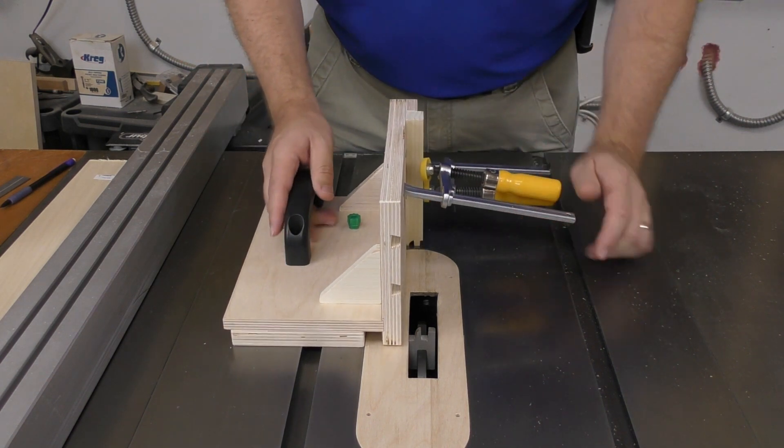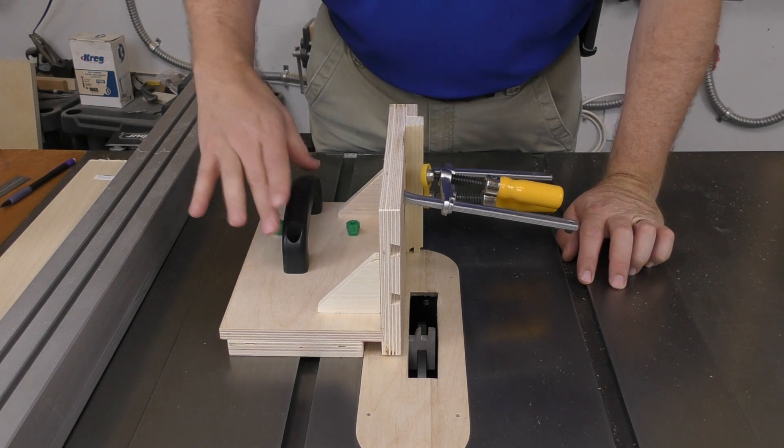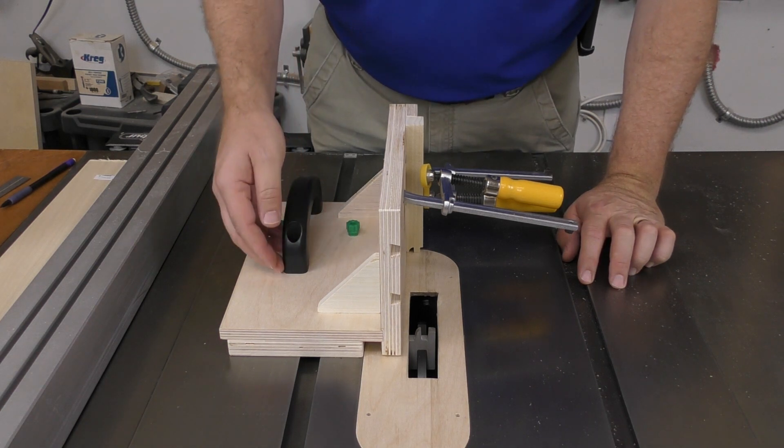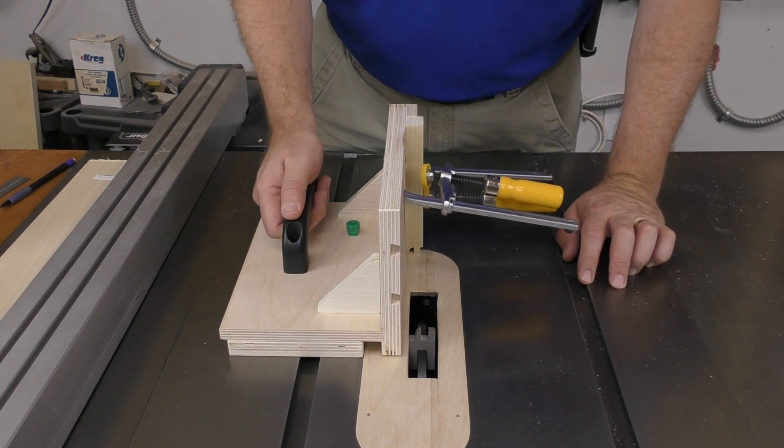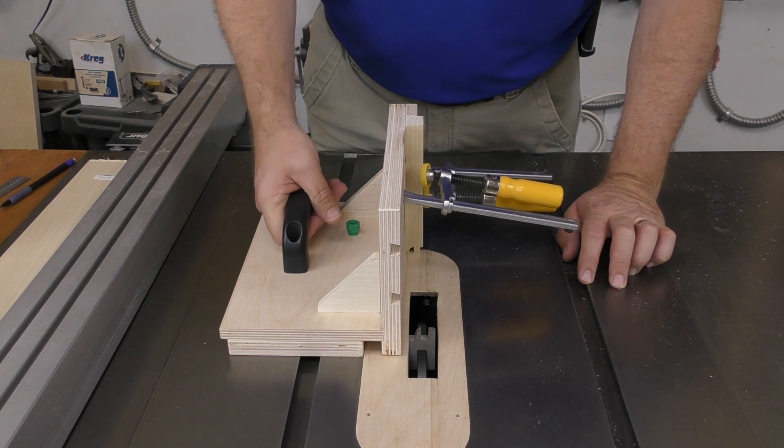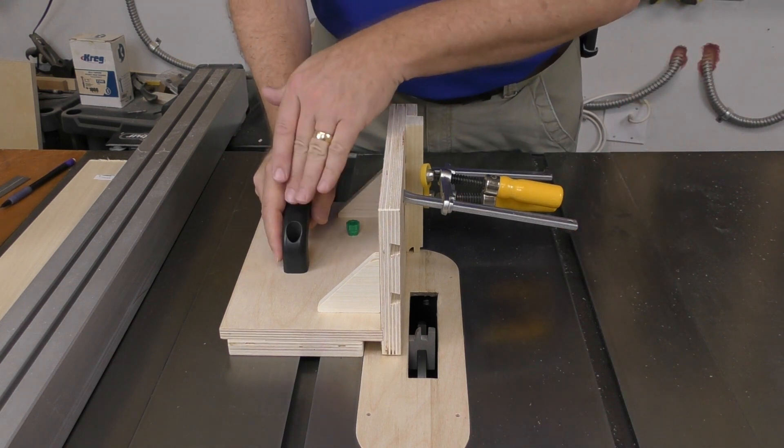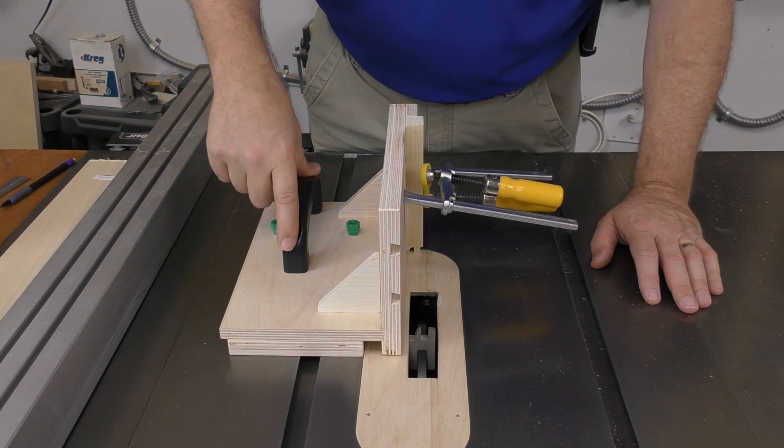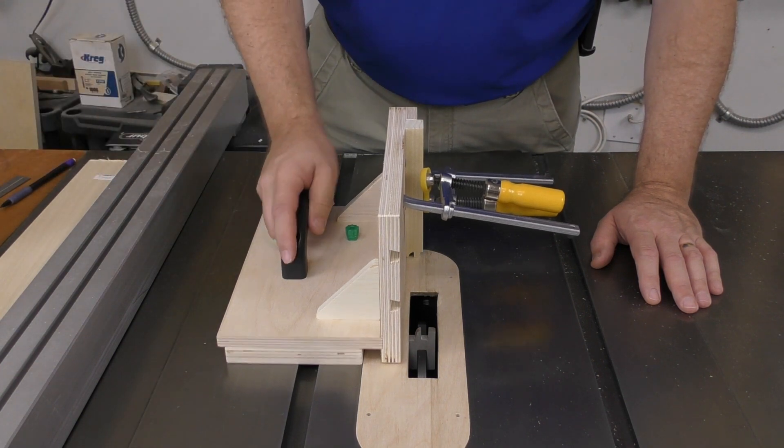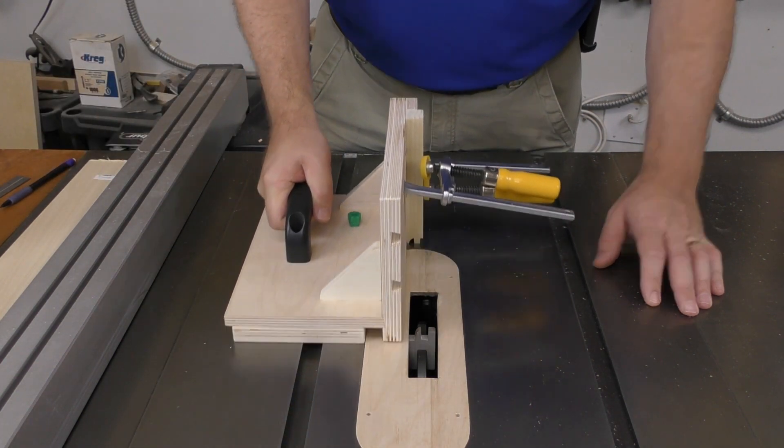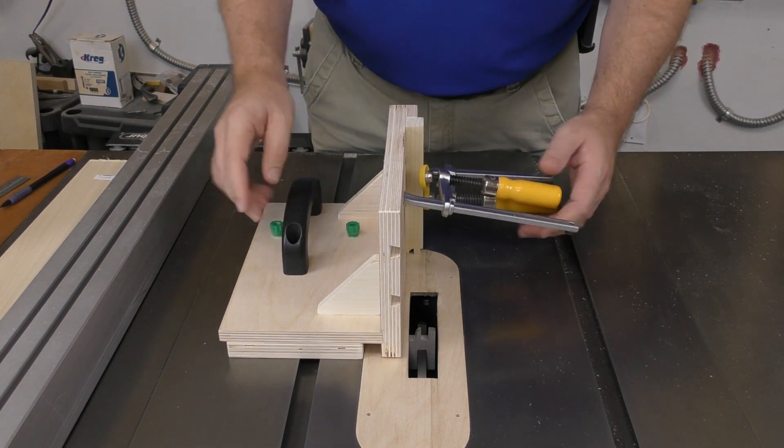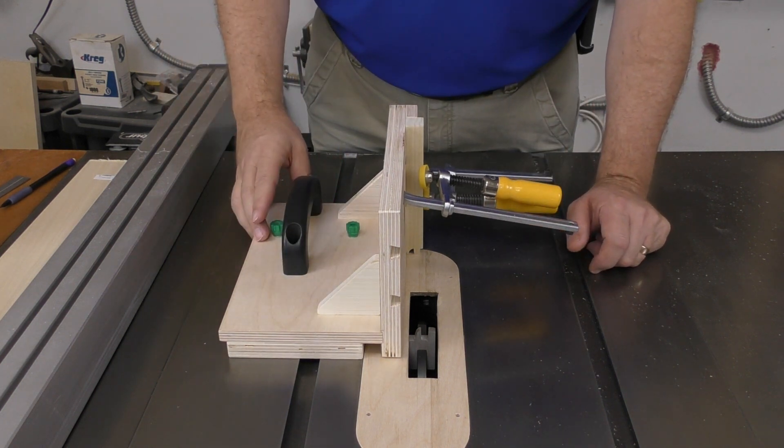And then I added a handle. Now you can use whatever handle you want. This is an older handle from one of my old microjig tools, so it's a very comfortable handle. It works well. You can buy this from microjig directly as a repair part. It'll come in yellow now, but it's a great handle to use, and so I happen to have one hanging around. But you can mount whatever handle on here you want.